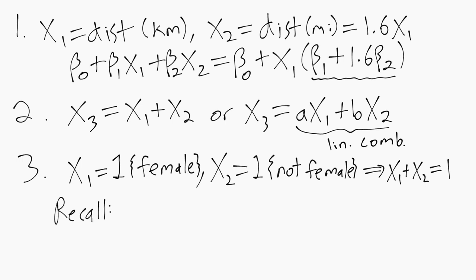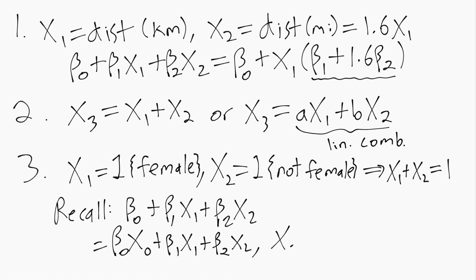So remember, when we write things like beta naught plus beta 1 x1 plus beta 2 x2, we can think of that as really beta naught times x naught plus beta 1 x1 plus beta 2 x2, where this x naught secret regressor is just equal to 1 for everyone.